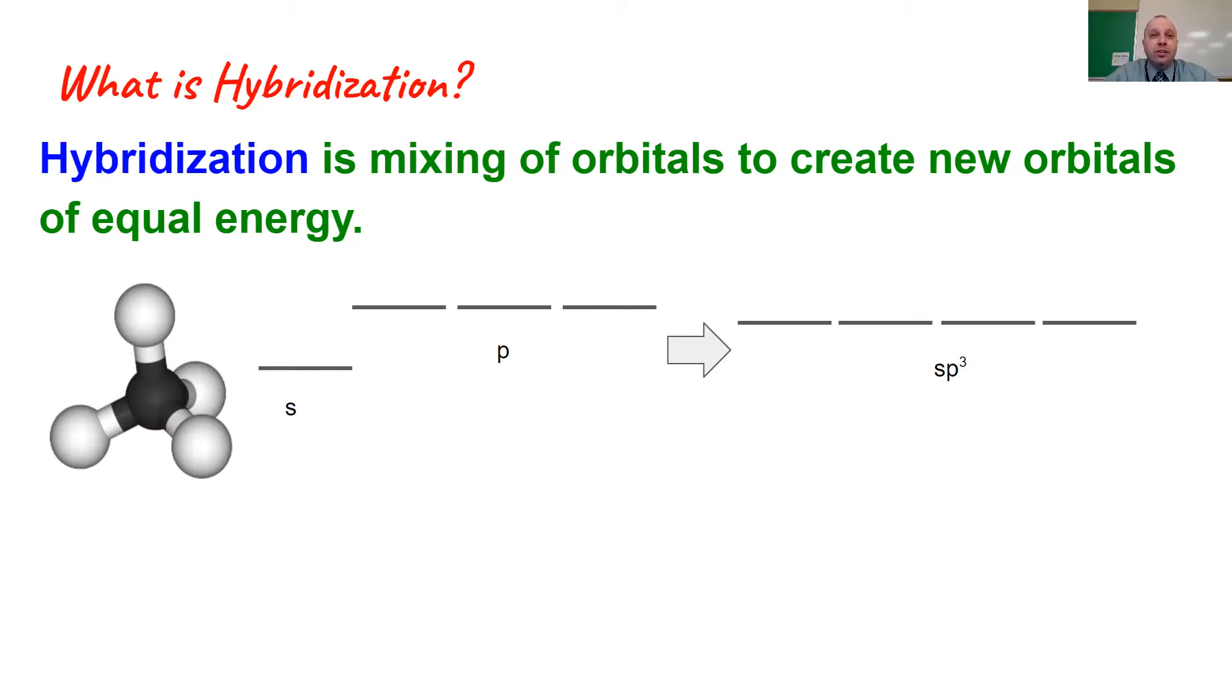And to explain that, we undergo this process of hybridization where we essentially put into a blender the s orbital and these three p orbitals. So one s orbital and three p orbitals, and we form four new orbitals that are slightly less in energy than p but slightly higher in energy than s, and we call them sp3.